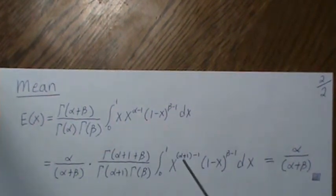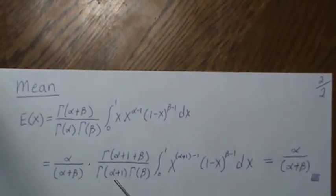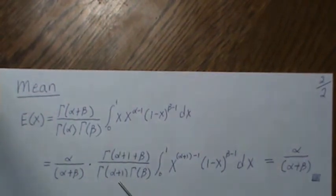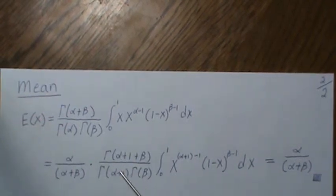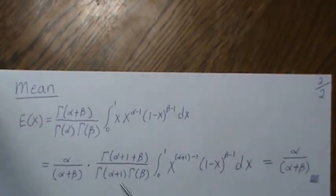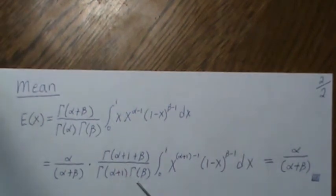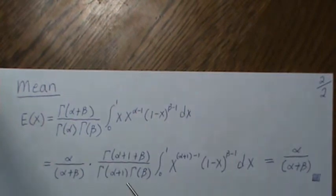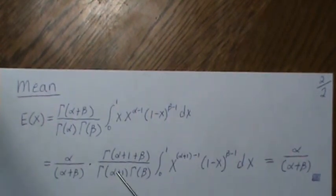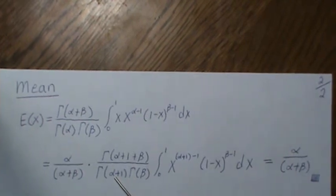If this were gamma of alpha plus one, and then this would be alpha plus one plus beta, this integrates to one. But we can't just arbitrarily change the value. We have to multiply it by a well-chosen one.